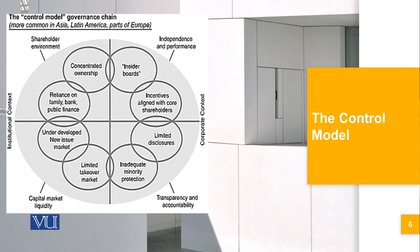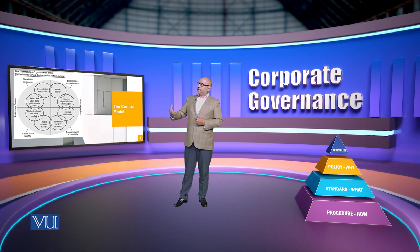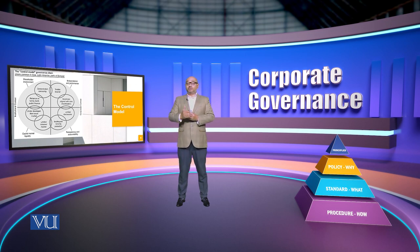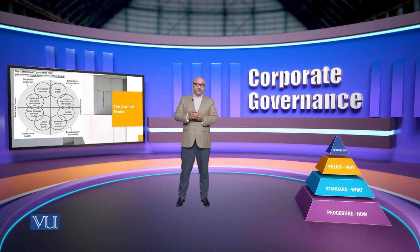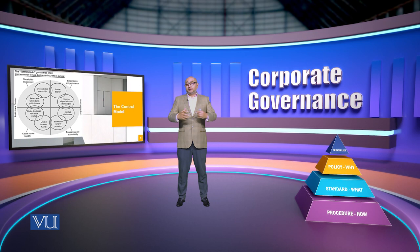Looking at the same four-dimensional framework — corporate context, institutional context, shareholder environment, independence and performance, transparency and accountability, and capital market liquidity — the control model has eight elements: concentrated ownership; reliance on family, bank, and public finance; insider boards where everyone is related; incentives aligned with core shareholders rather than stakeholders; limited disclosure; inadequate minority protection; limited market takeover; and underdeveloped new-issue markets, because it is controlled by a vested, closed-door group that does not open up to outside control or shareholding.